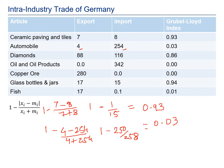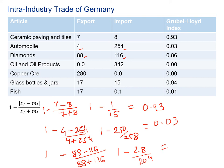For diamonds: exports are 88 and imports are 116. Applying the formula: 1 − |88 − 116| / (88 + 116) = 1 − 28/204. Dividing 28 by 204 gives approximately 0.137, and subtracting from 1 gives an answer of 0.86.